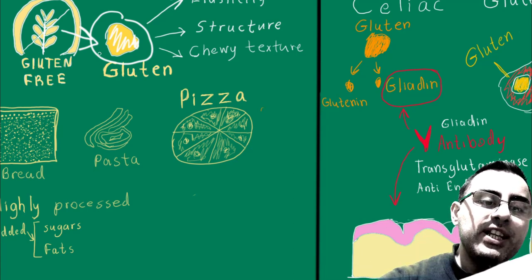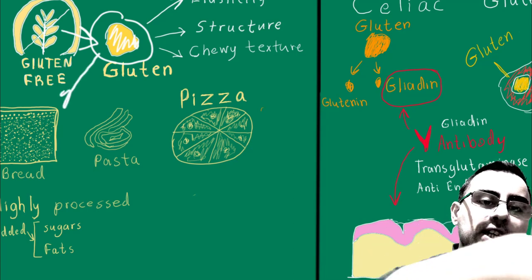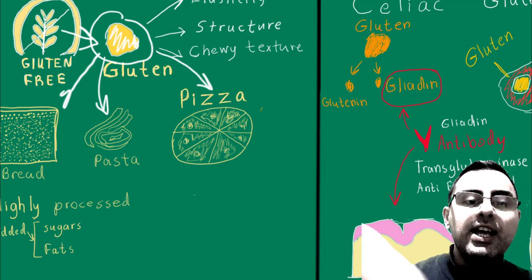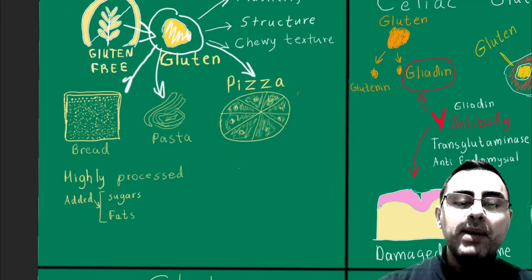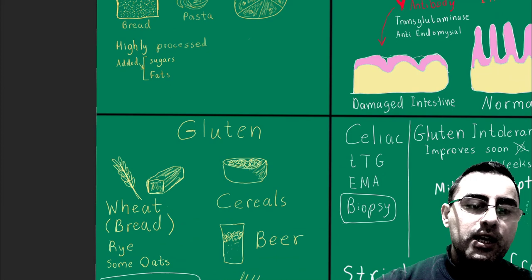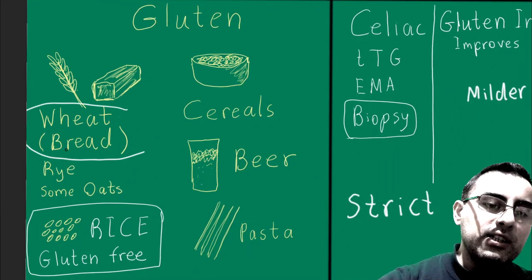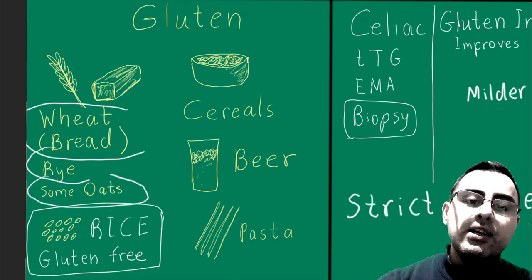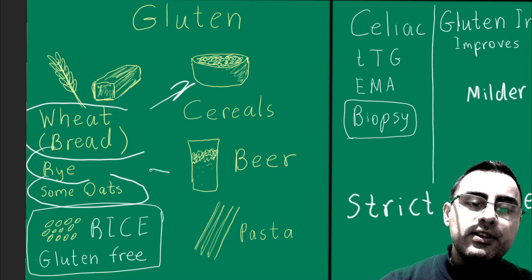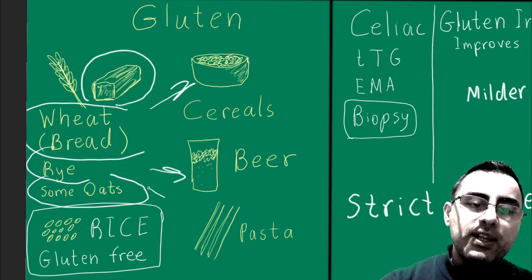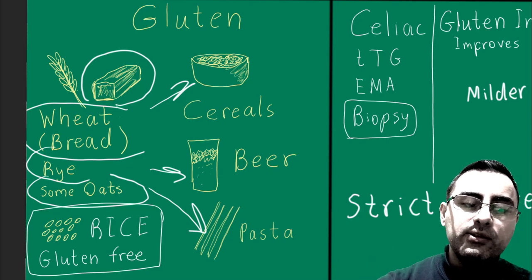Gluten is present in bread, in pasta, in pizza, and in almost any baked products. Wheat contains gluten, and some oats contain gluten. So cereals, beers, any baked products, and pasta commonly contain gluten.